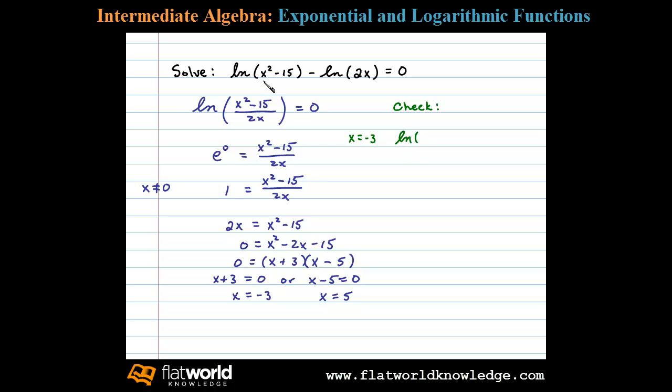When we substitute x equals negative 3 into the original, we have the natural log of negative 3 squared, which is 9 minus 15, minus the natural log of 2 times negative 3, which is negative 6, and we need to see if that equals 0. But at this point I notice I have natural log of a negative number, and we know that's undefined, so right away we know x equals negative 3 is extraneous and so we'll disregard that answer.